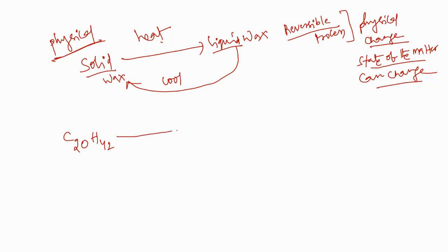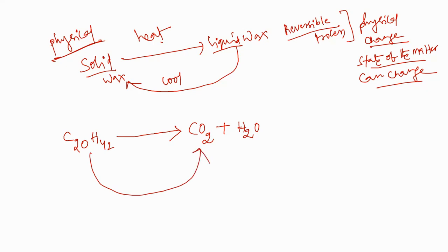When you light the wick present in the candle, the wick burns and gives carbon dioxide and steam — that is, water vapor. So here, C20H42 (paraffin wax) on lighting converts into carbon dioxide and water vapor.